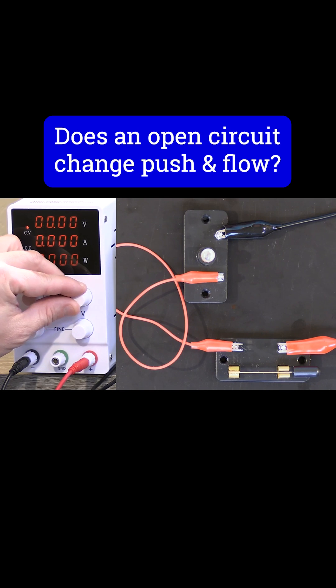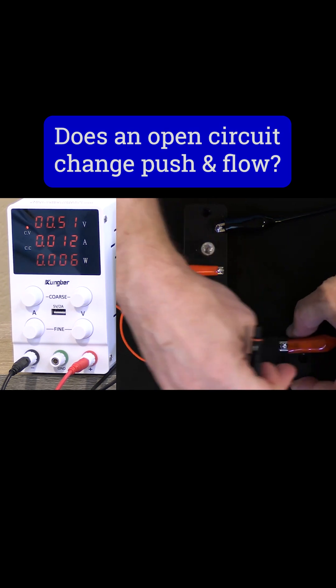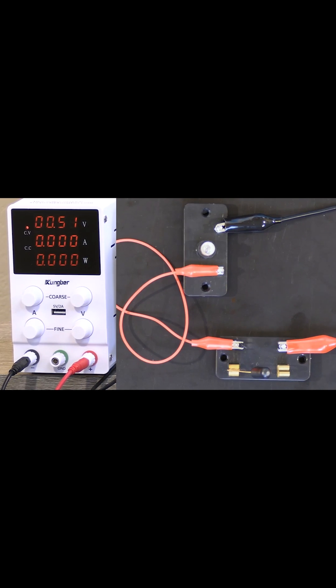Now, when I dial it up just a little bit and the display is telling me that it's supplying 0.222 amps, but notice if I open this circuit, right? The current goes down to zero.